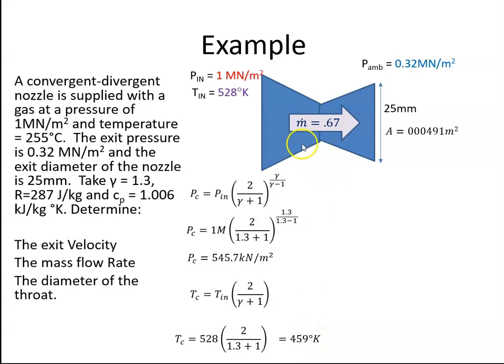At the throat, at this point here, the velocity is at the speed of sound, and the speed of sound is gamma RT. The temperature we're going to use is the critical temperature. So I used my 459, gamma was 1.3, R was 287, and I get the speed of sound to be 413 meters per second.